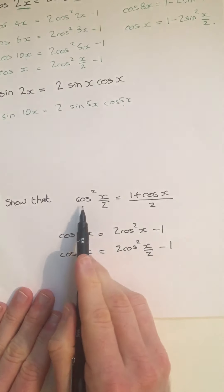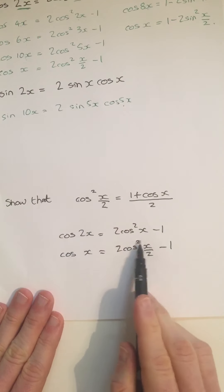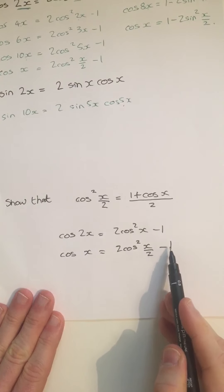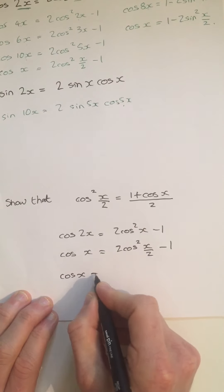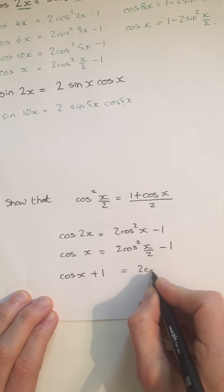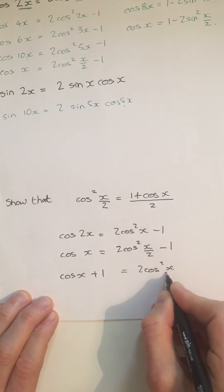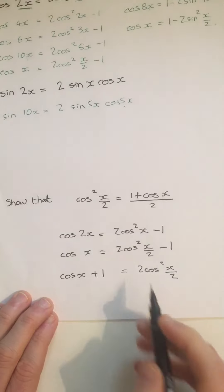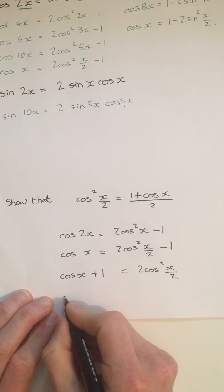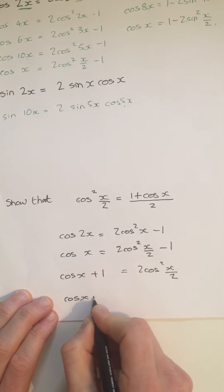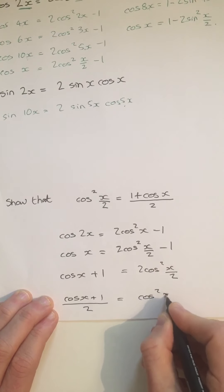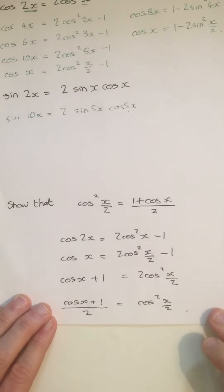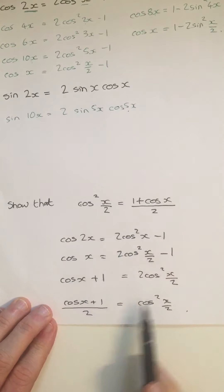I am now going to make the cos squared x over 2 the subject. So I'll first add 1 to the other side. And then I can divide both sides by 2. So I'll get cos x plus 1 all over 2 is equal to cos squared x over 2. And there we go. We've shown they are equivalent using the double angle formula.